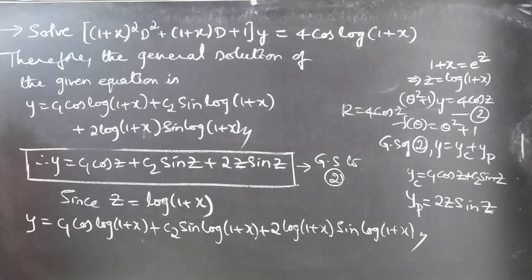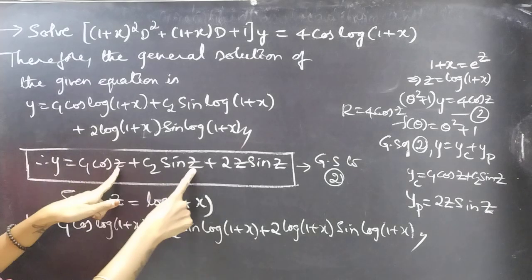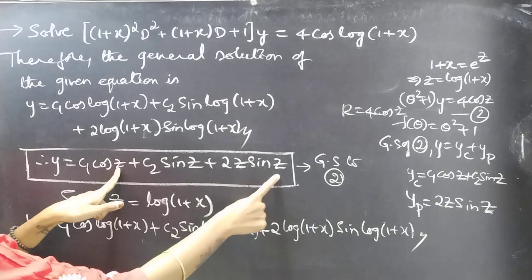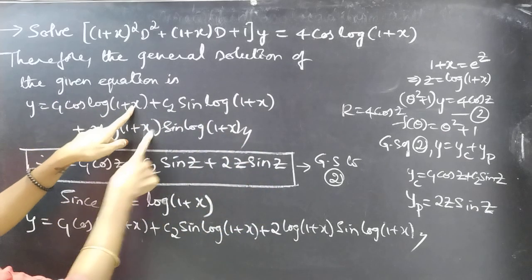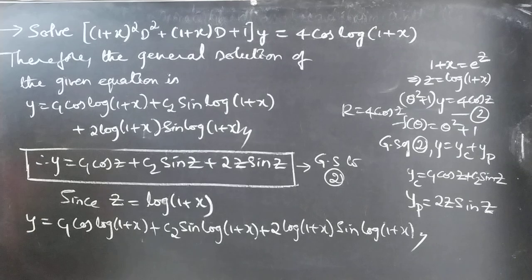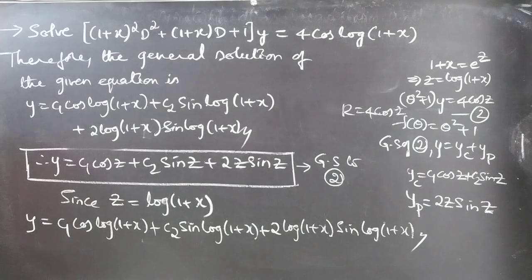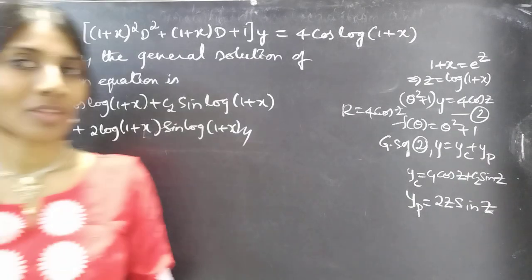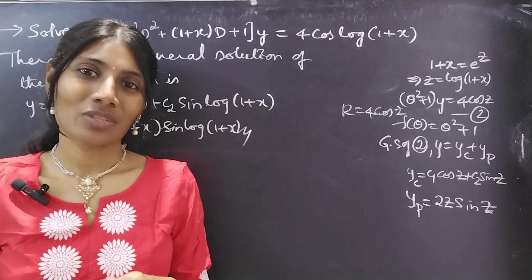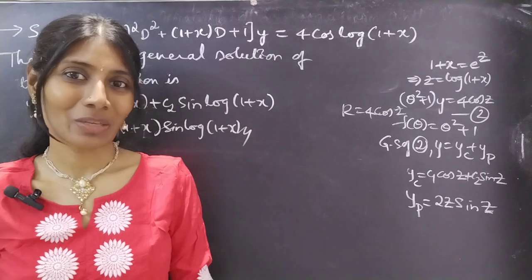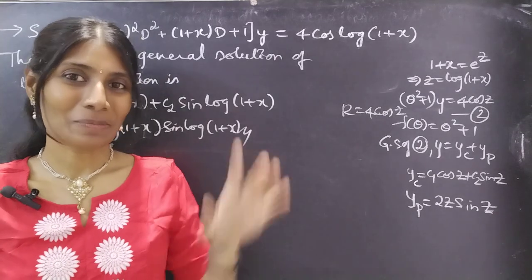The general solution to equation 2 is in terms of z, and the general solution to the given equation is in terms of x. We have seen a problem from Legendre's equation in this video. I hope you understood. See you in the next video. Bye-bye.